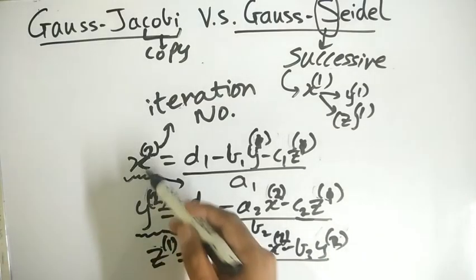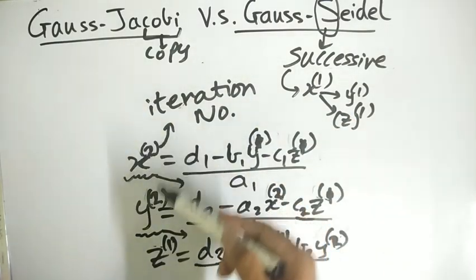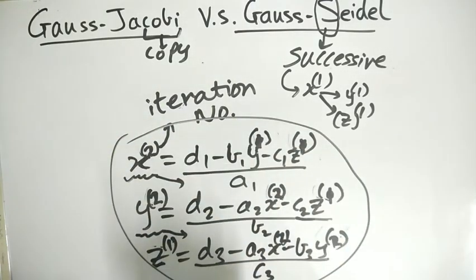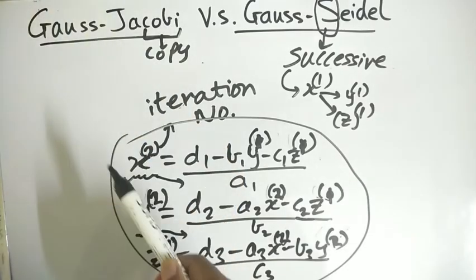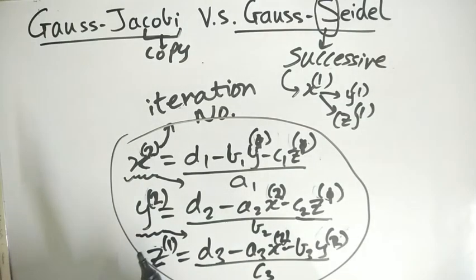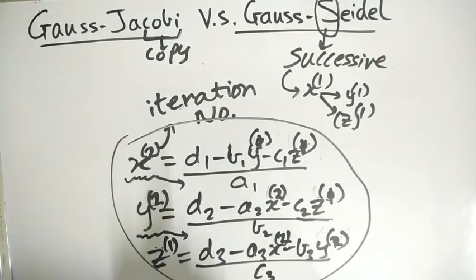So we use whatever value we get in Gauss-Seidel—whatever value we obtain, we use it in the same process, in the same iteration itself. Whereas in Gauss-Jacobi, we used to just copy 0, 0, 0 or 1, 1, 1. So that's the main difference. I hope you'll be able to do and solve a lot of questions related to it. Hope you like the video. Please like, share, and subscribe.